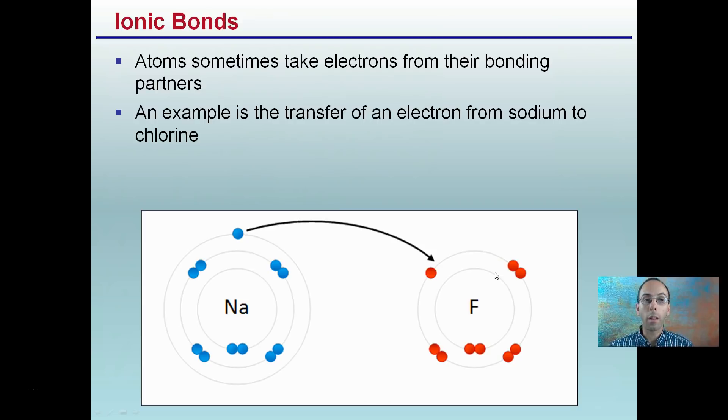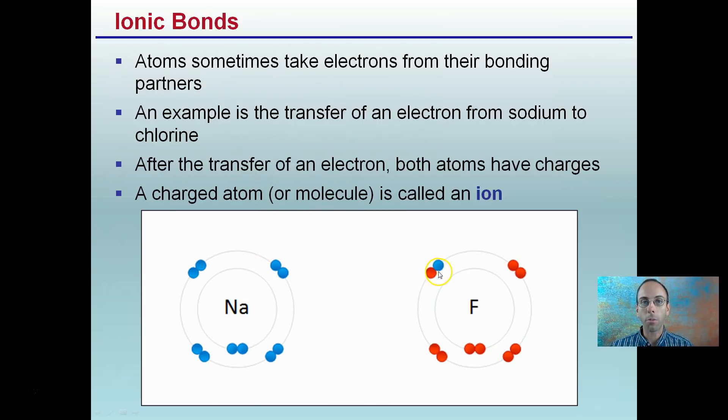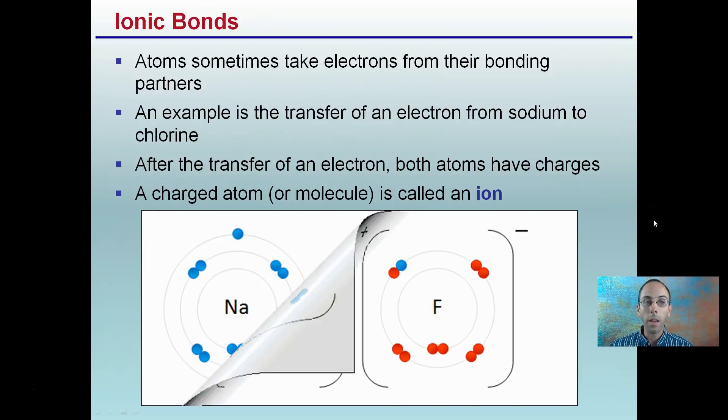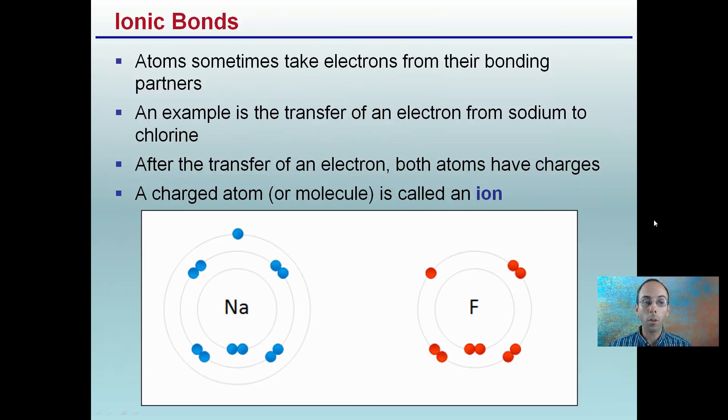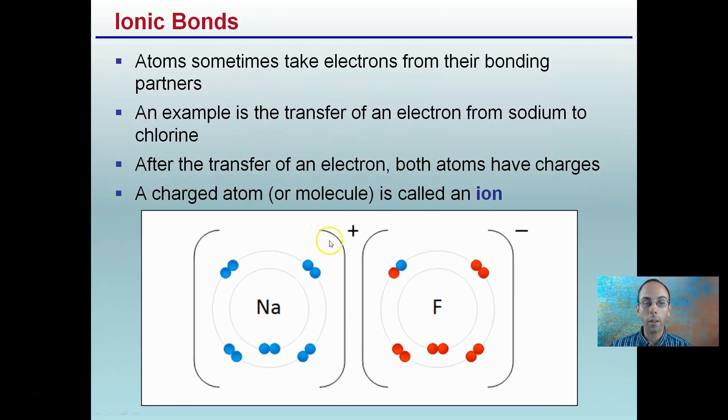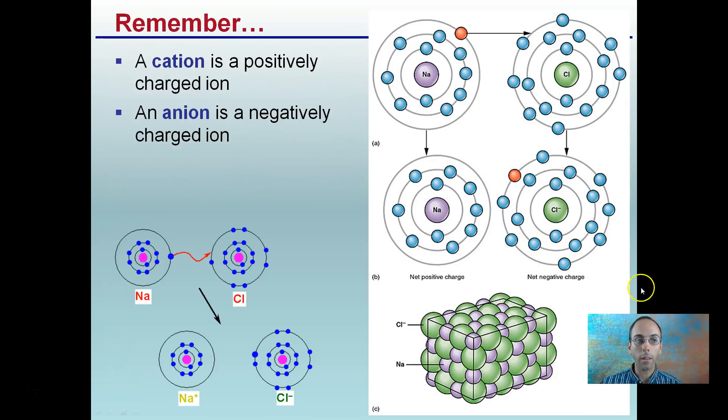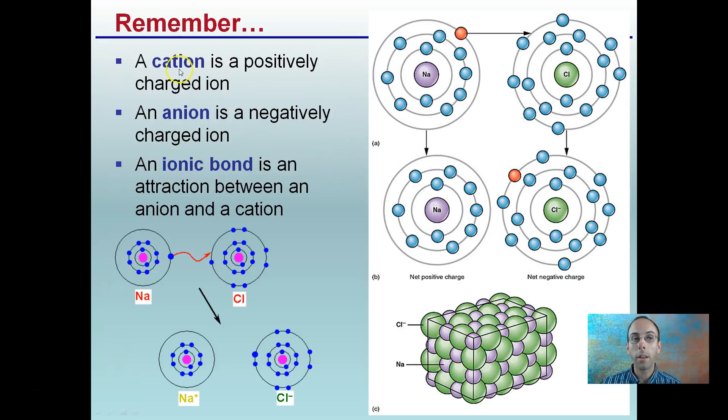So let's start with ionic bonds. Atoms sometimes take electrons from their bonding partners, as we see in this animation. An example is a transferred electron from sodium to chlorine. You see here sodium being transferred over. Both atoms have charges, and a charged atom or molecule is called an ion. You see a positive and a negative here being drawn together. Now these ions, remember we call a positively charged ion a cation, and a negatively charged ion an anion. And as a result,